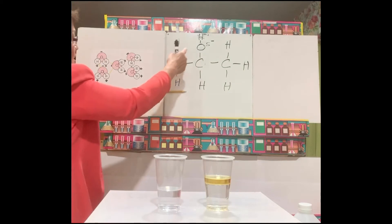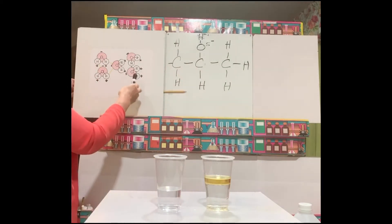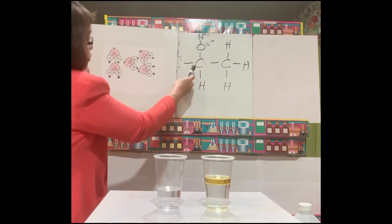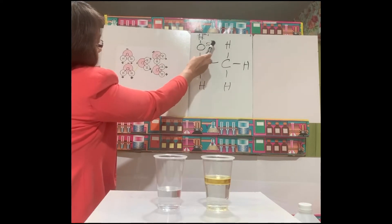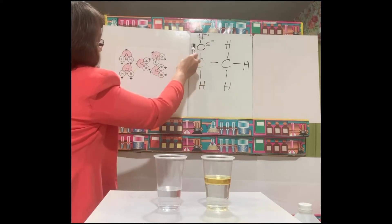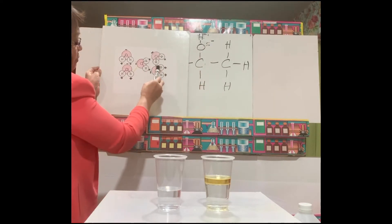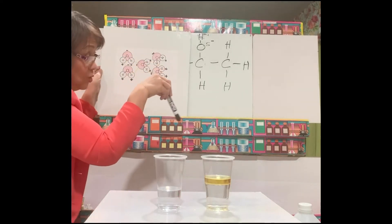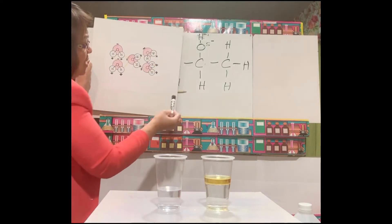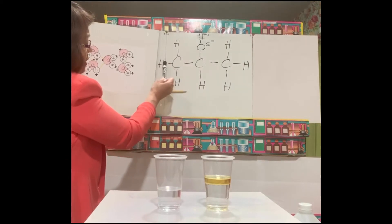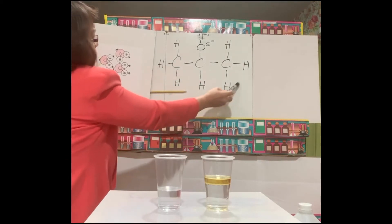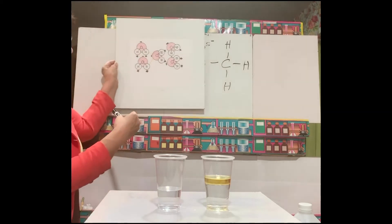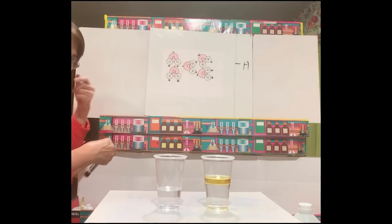So when we mix isopropyl alcohol with water, there is an attraction between the polar end of the alcohol molecule and the polar molecule of water. That is why they mix uniformly. As you can see, it has something to do with the molecular structure of the two substances.